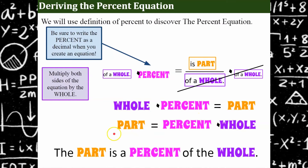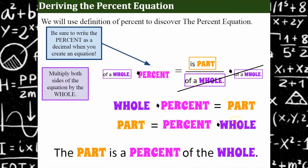Now I can use the commutative property of multiplication to rewrite this as: part equals percent times whole. Mathematically it says part equals percent times whole, but in the English language it reads: the part 'is' (the equal sign) a percent 'of' (multiply) the whole. So when you see an English sentence, you're going to change it into a mathematical sentence, which is an equation. A part is a percent of a whole — using properties of algebra, we've rewritten this so that we have a usable equation.